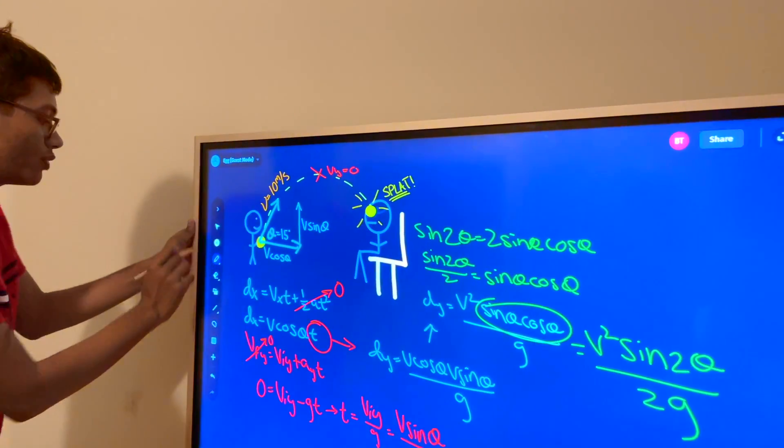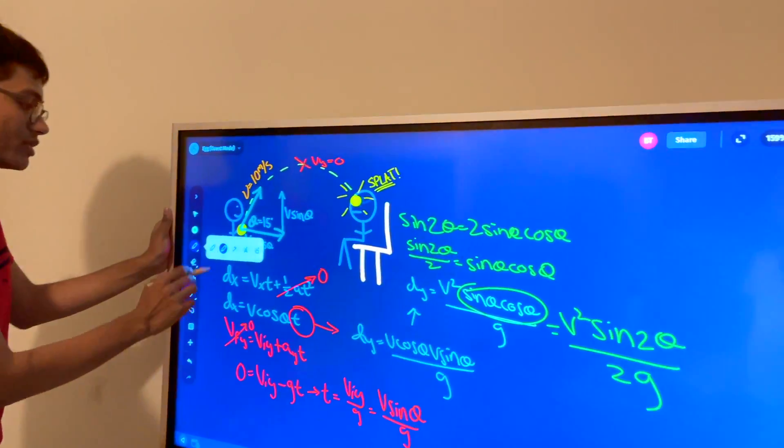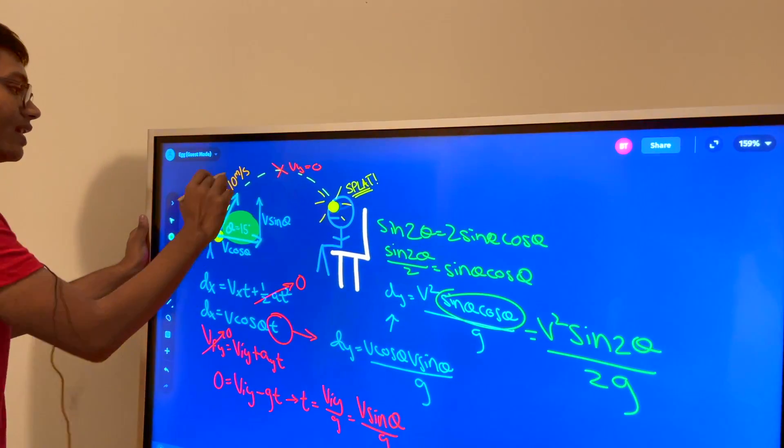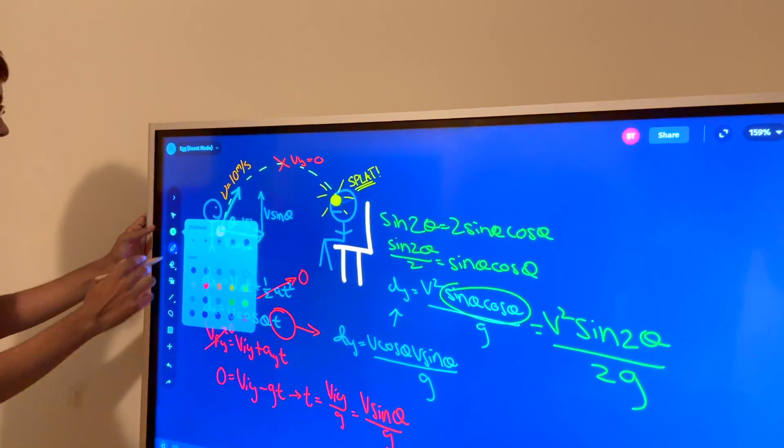Now all I have to do is plug in my parameters. What are my parameters? My parameters are theta is equal to 15 and my velocity is equal to 10. So let's go ahead and plug them in.